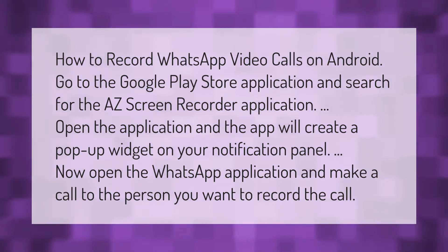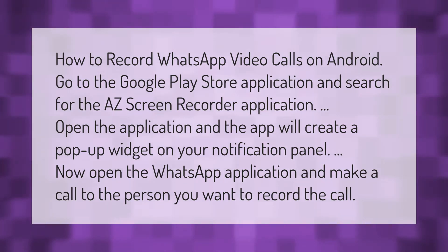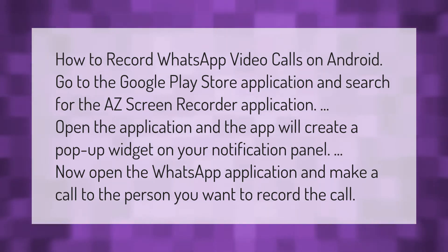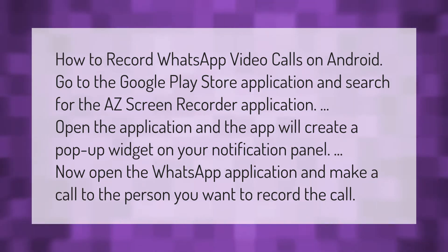To record WhatsApp video calls on Android, go to the Google Play Store application and search for the AS Screen Recorder application. Open the application and the app will create a pop-up widget on your notification panel.